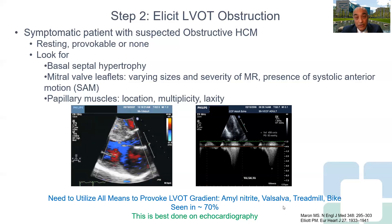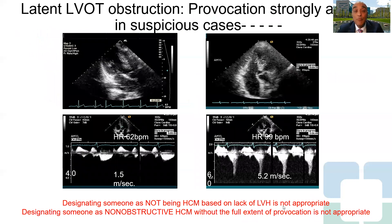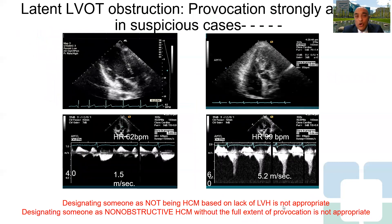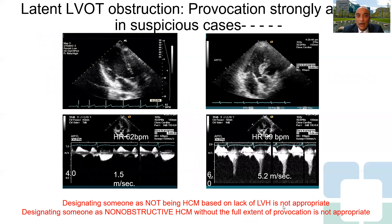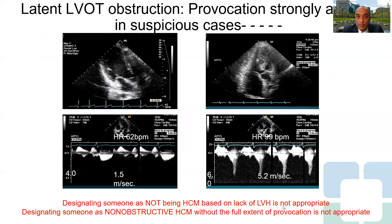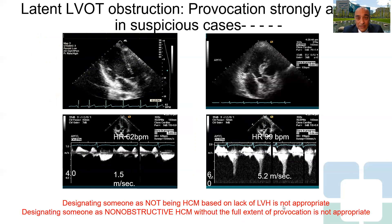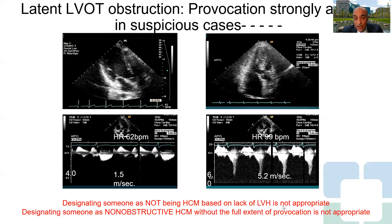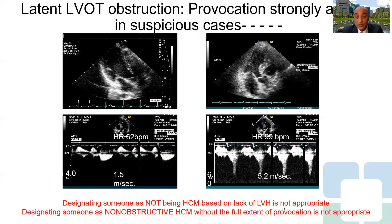Echocardiography or stress echocardiography is the best way to look for this. Many patients will have latent outflow tract obstruction, like a case where there is no basal septal hypertrophy but concern about papillary muscle problems — when provoked with amyl nitrite, a gradient that was non-existent became severe with significant symptom eliciting. It is crucial to recognize that designating somebody as not having hypertrophic cardiomyopathy because they do not have LVH is not appropriate, and designating somebody as non-obstructive HCM without the full extent of provocation is also not appropriate.